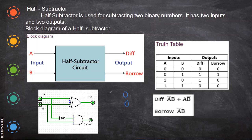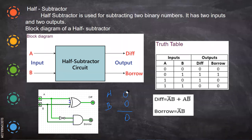So what are difference and borrow? For example, when you have A = 0 and B = 0 and you subtract, the difference is zero and the borrow is also zero, because you are not borrowing anything for the subtraction.